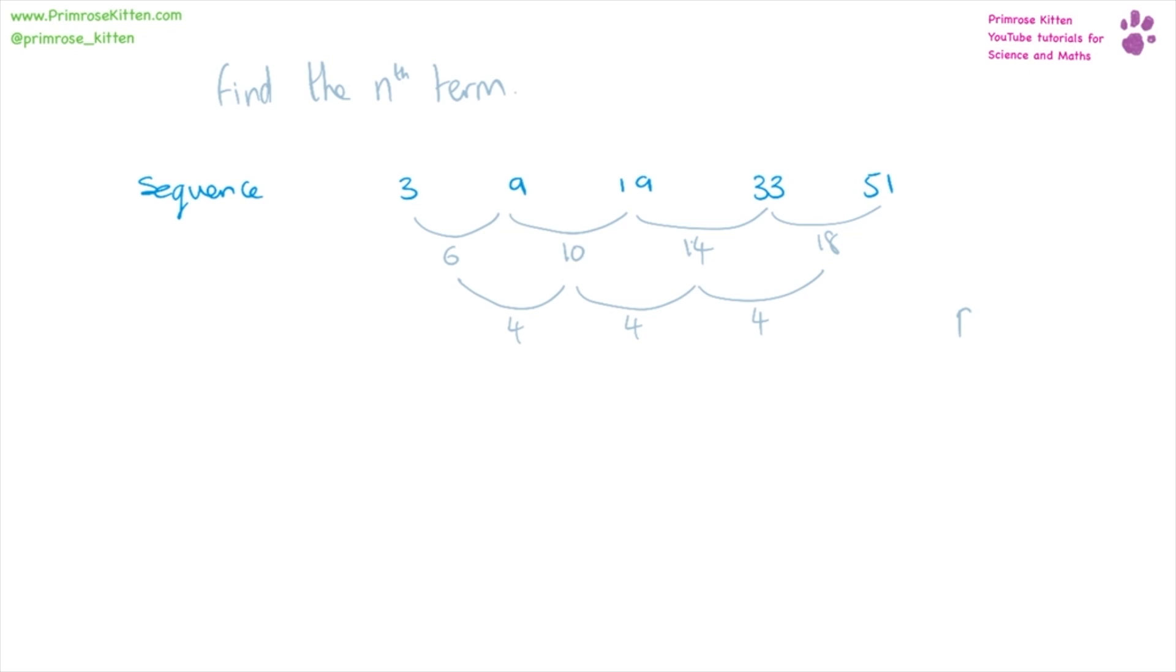Now because it's gone down to two levels that tells us it is an n squared, and because it's 4 we need to half that and go to 2. So we have 2n squared. I'm going to draw a line there to make it easy for you to see where we finished.